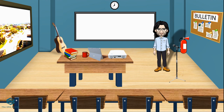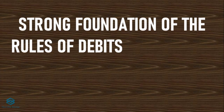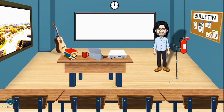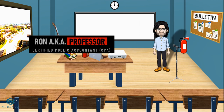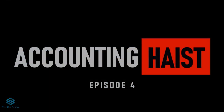By the way, if you haven't seen our previous episodes, we put the link to those videos in the description below. I believe that before proceeding with the next steps in the accounting cycle, you've got to have a strong foundation of the journalizing process and the application of the rules of debits and credits. So without further ado, my name is Ron, Certified Public Accountant, and I welcome you to the Accounting Heist Episode 4.